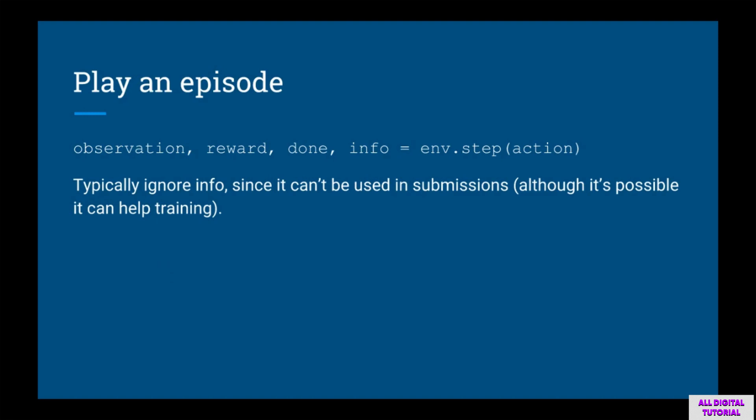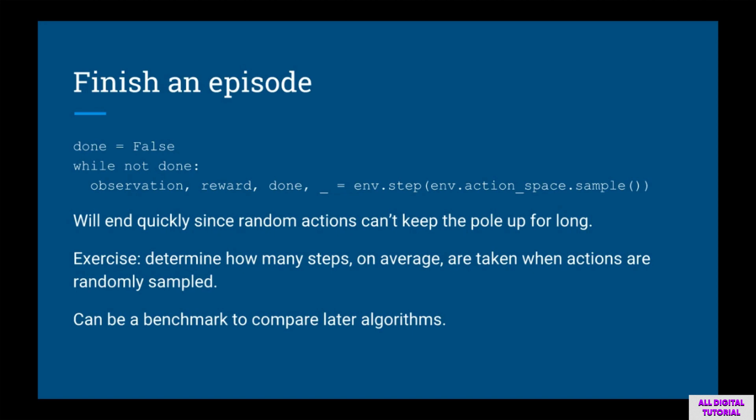The info dictionary can contain useful information to help your agent learn, but as per the rules of OpenAI Gym, you are not allowed to use this in your submissions. Because we're not doing any learning in this lecture, we can simply sample random actions until the episode is over. As an exercise, you may want to add a counter to see how many steps on average are completed before the episode is over when doing random actions — this can act as a benchmark.